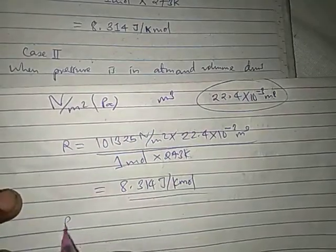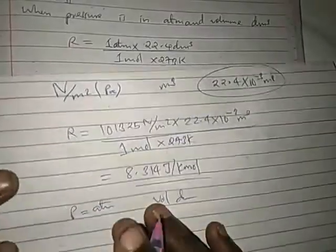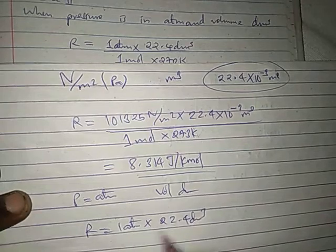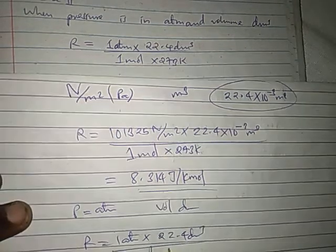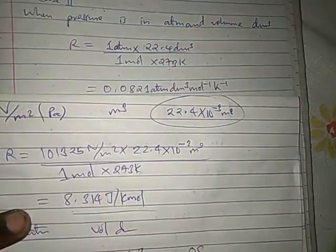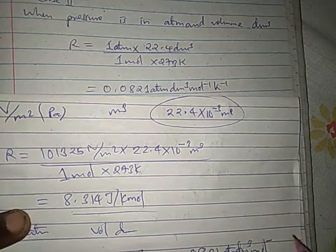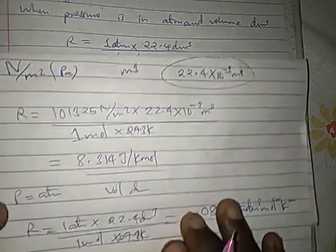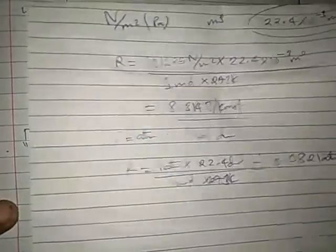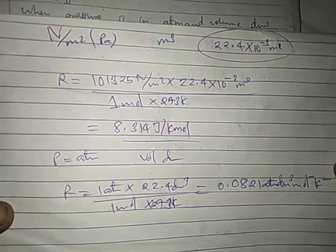Case 2 — if pressure is in atm and volume is in dm³: R equals 1 atm × 22.4 dm³ divided by 1 mole × 273 K, giving R equals 0.0821 atm·dm³·mol⁻¹·K⁻¹. So we have two values of the universal molar gas constant. In exams, you are always provided with this constant, so there is no need to memorize it.